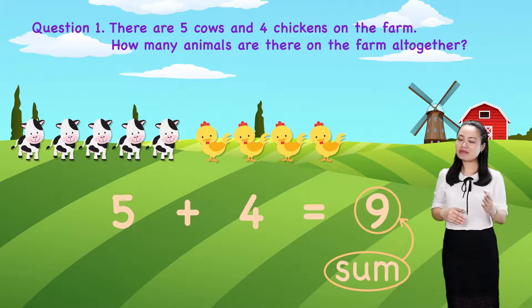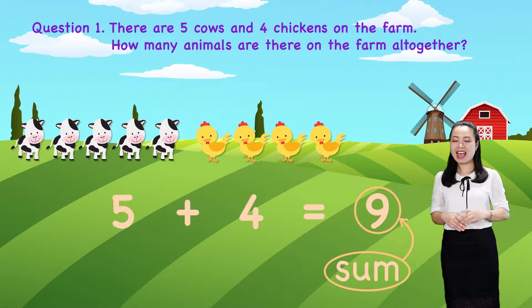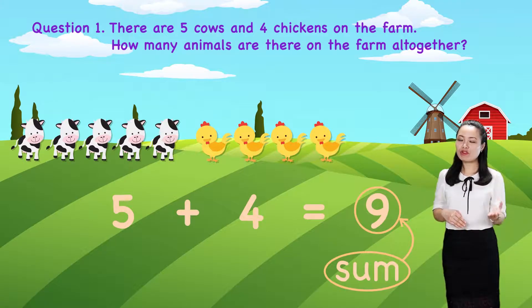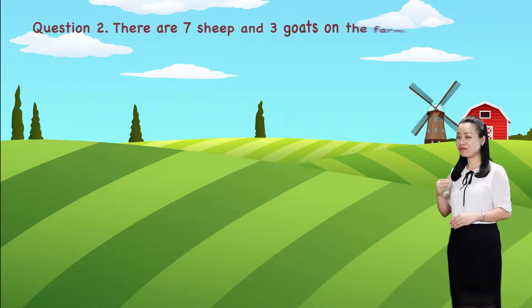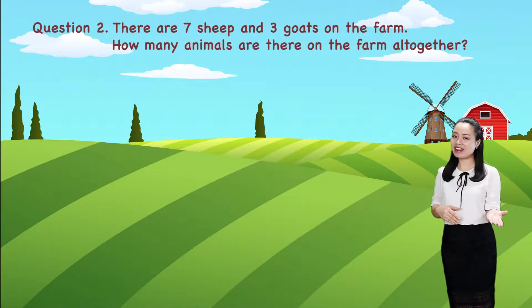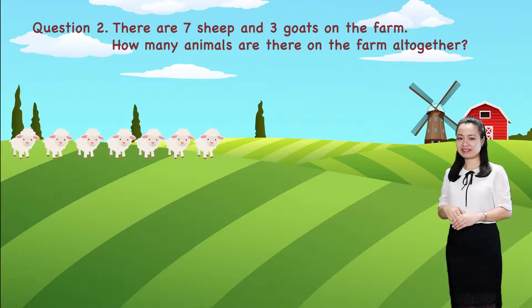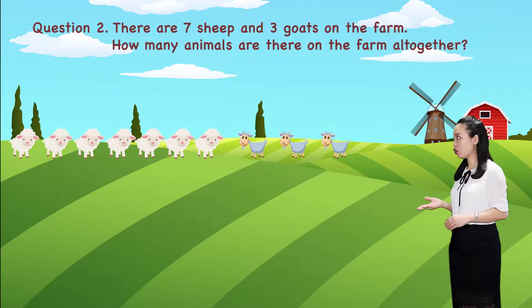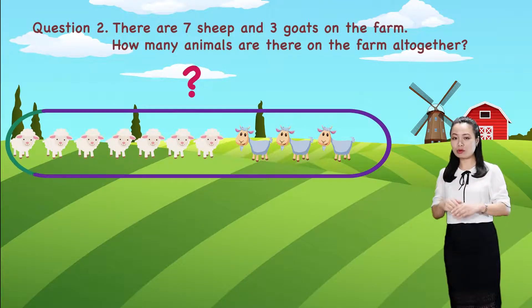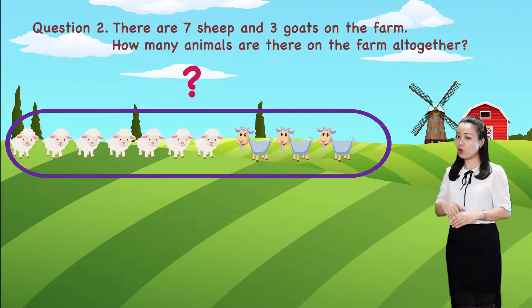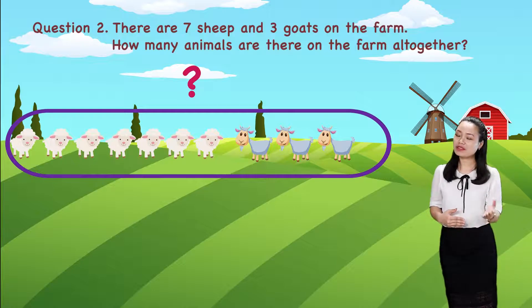Now, take a break for a while and then we move on to Question 2. There are 7 sheep and 3 goats on the farm. How many animals are there on the farm all together? I give you some time to find the answer by yourself.